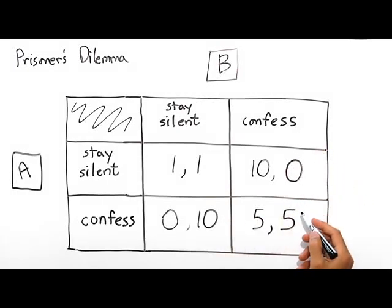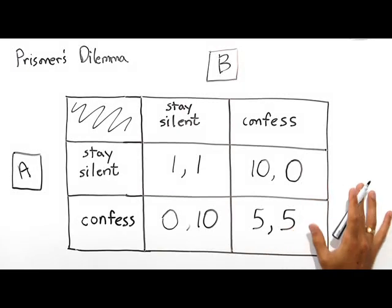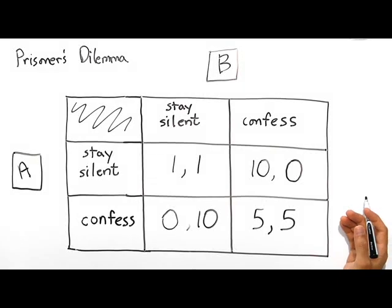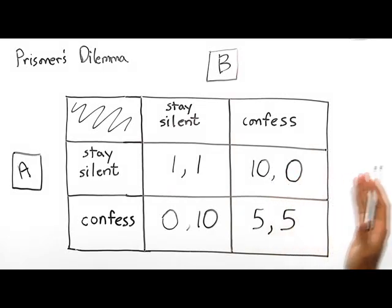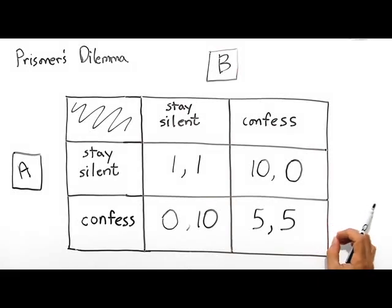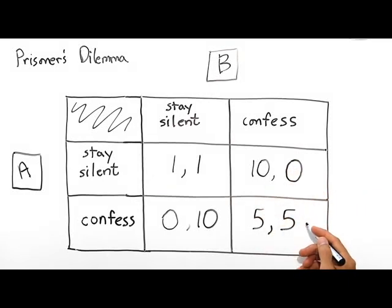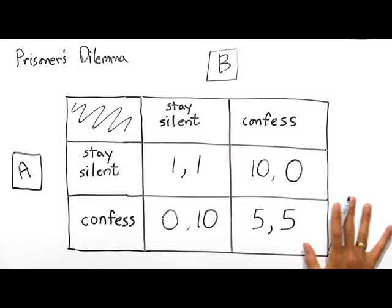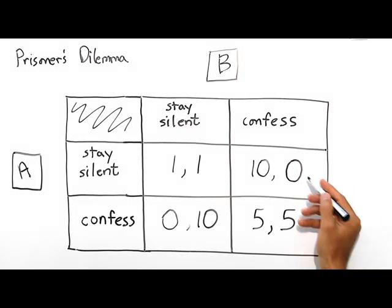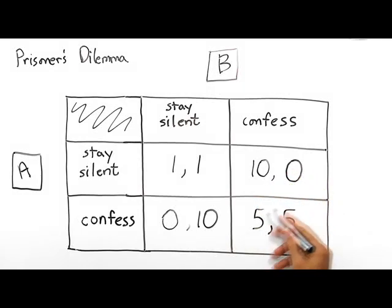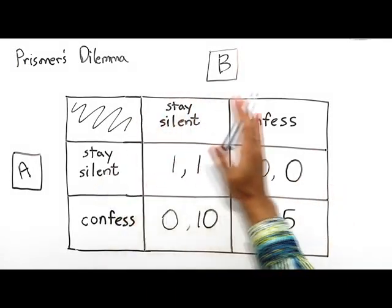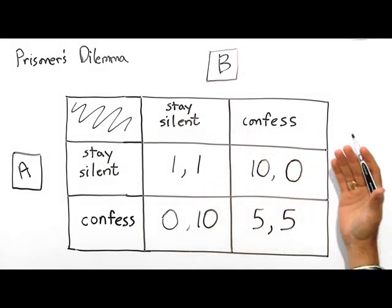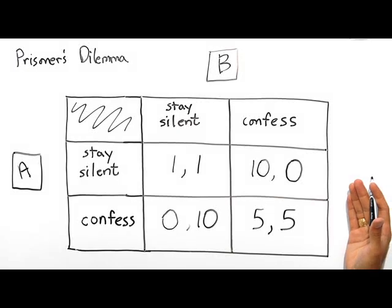But the pressure on them is to confess, because the likelihood of one of them confessing and the other not is quite high. If they do not confess and the other does, they will spend 10 years in prison — that's a long time. Whereas if they confess and the other doesn't, they'll go free. If they both confess, they'll get five years in prison. The result is that it's safer to confess: there's a real possibility that by confessing you'll go free while your partner gets 10 years, and the worst that can happen is a five-year split. Staying silent is the best option for both of them together, but the risk of staying silent is that your partner confesses — your partner defects — and you'll be spending 10 years in prison.